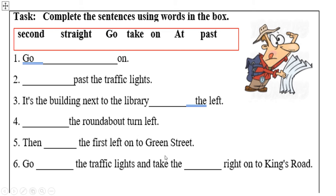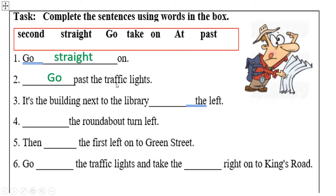Our next task is to complete the sentences using the words in the box. The box contains direction words and prepositions. The first sentence — the missing word is 'go straight on.' (Идите прямо.) The second — go past the traffic lights. (Идите мимо светофоров.)